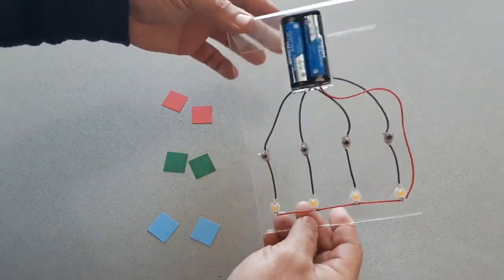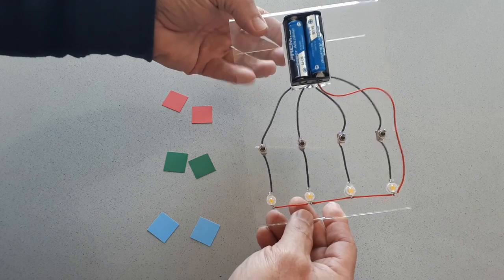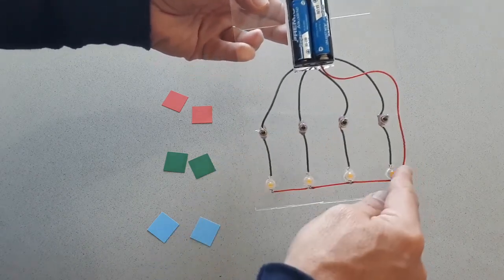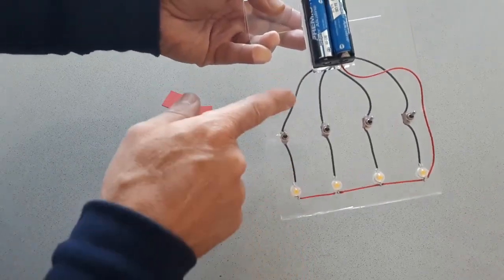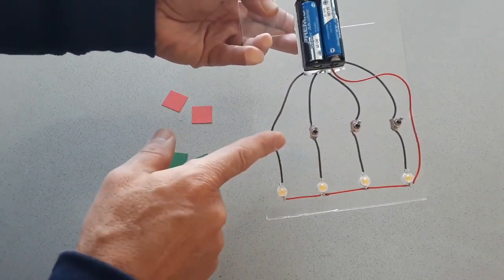This is the first circuit that I learned when I was a kid. This is a very simple circuit in which we have the positive wire that goes to all the LEDs and we have the negative wire that goes to all the LEDs but through an interrupt.